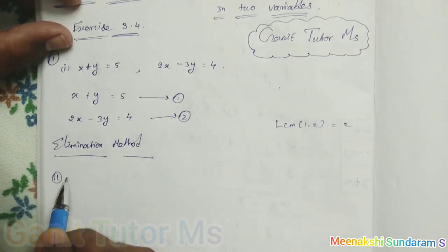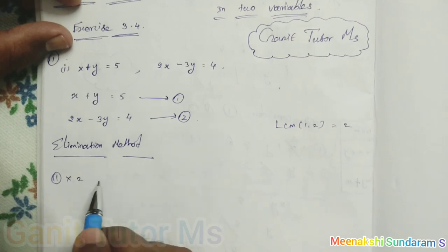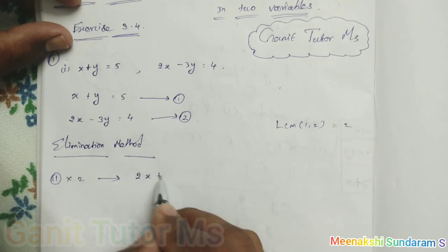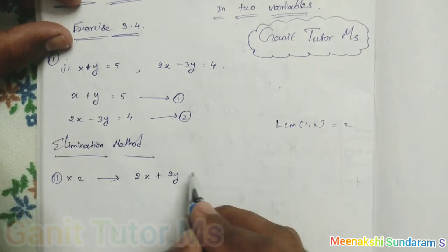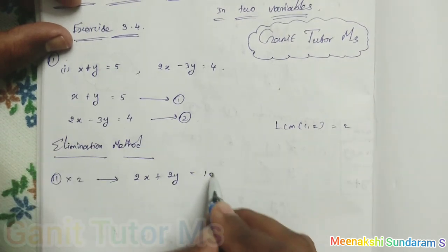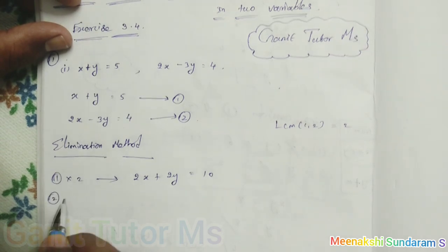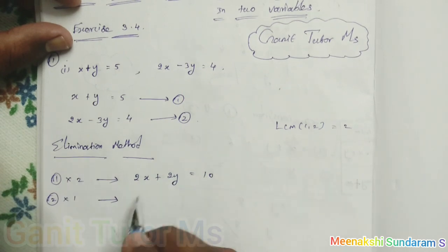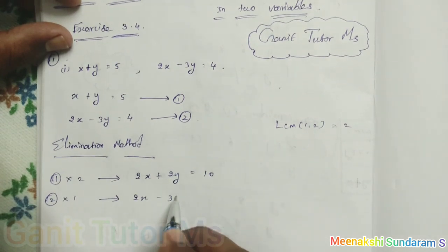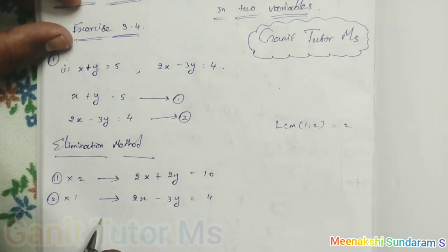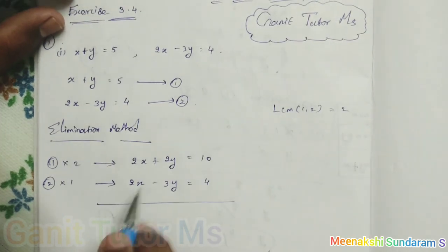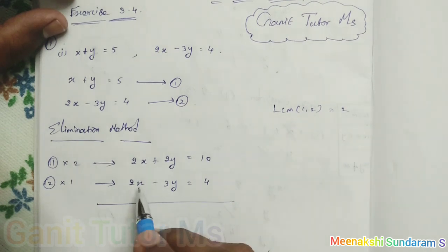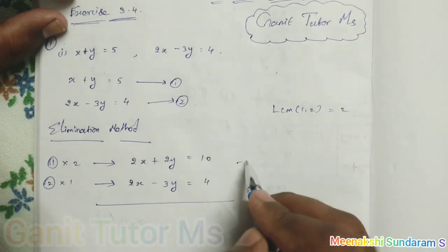I want to make the coefficient of x equal to 2, so I simply multiply equation 1 by 2. The equation becomes 2x plus 2y equals 10. Then equation number 2 already has coefficient 2, so I just write it as 2x minus 3y equals 4. Now I want to remove the x variable, so when I add these two equations it becomes 4x, so I will go with subtraction.